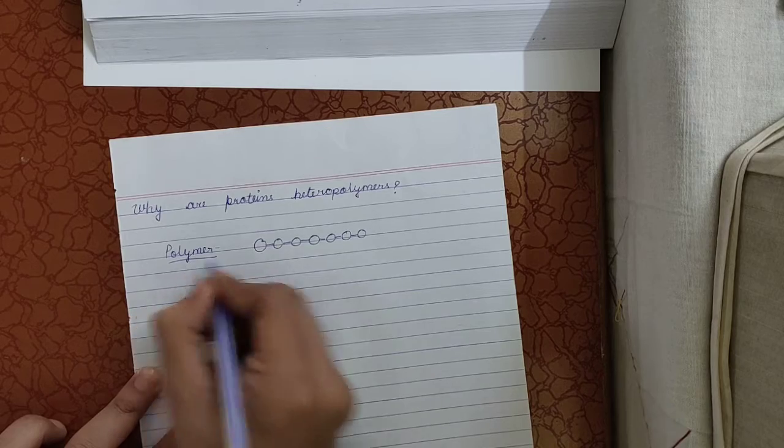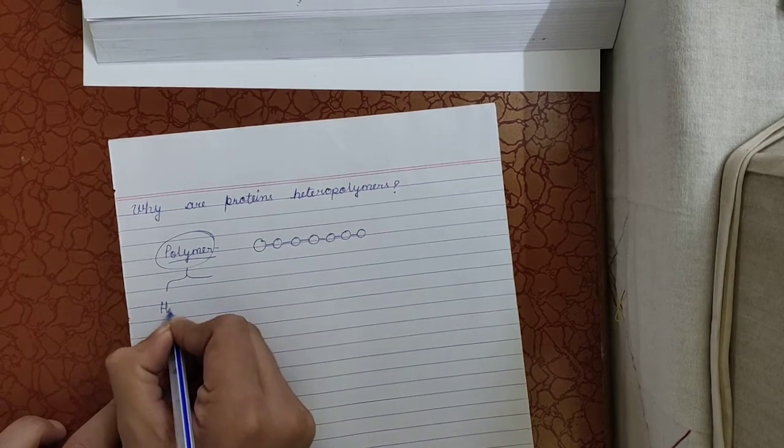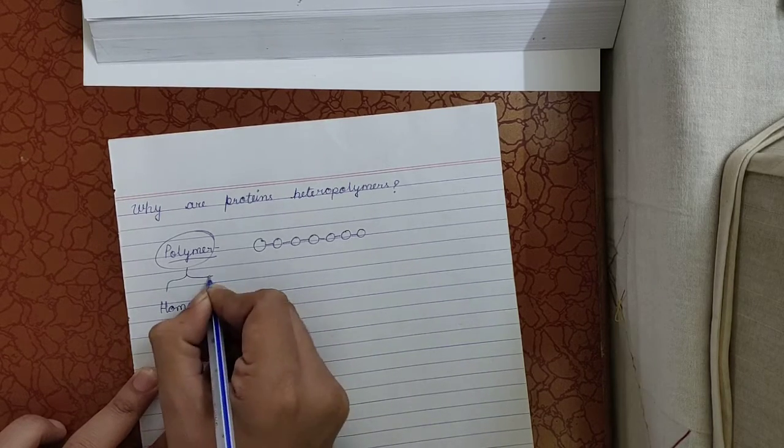Now, what is a heteropolymer? Basically, polymers are of two types: homopolymer and heteropolymer.